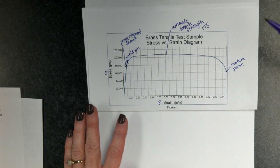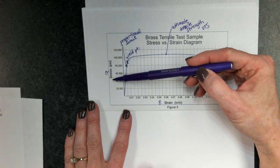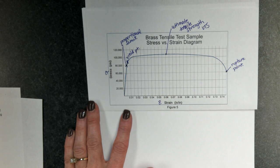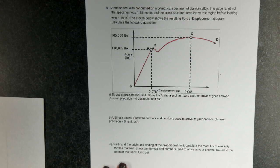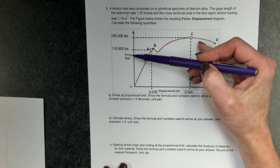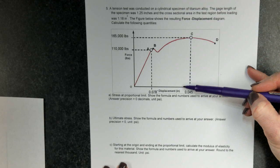It's important to understand, whenever you're given a graph, that you look to see if it is stress-strain. And it may be a force-displacement diagram, as the one I've shown here. Force versus displacement.